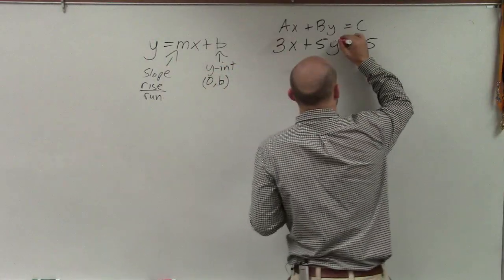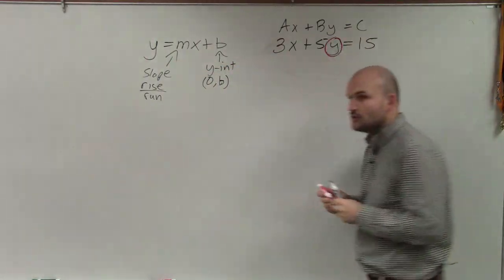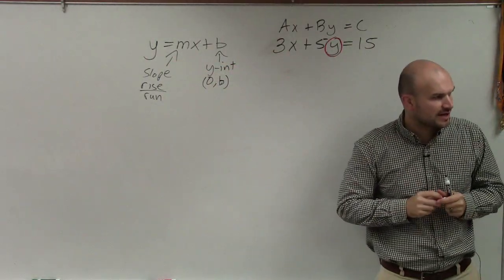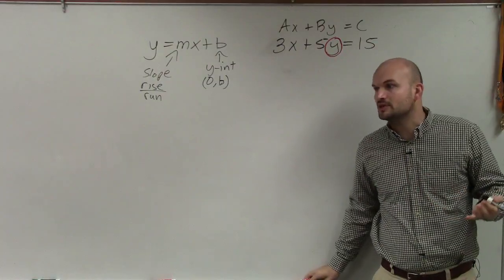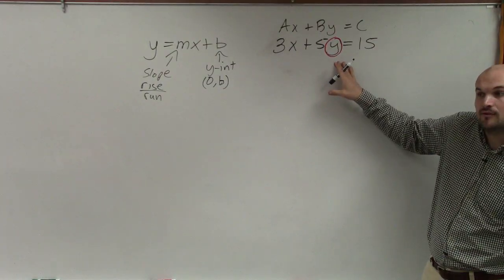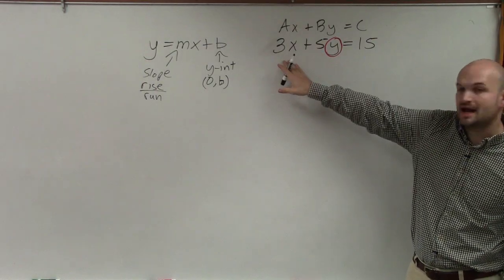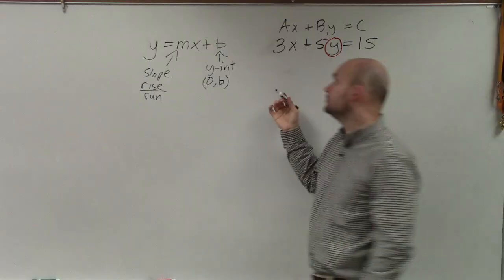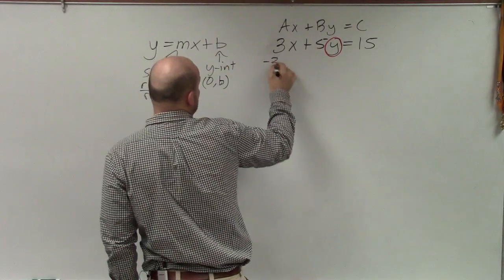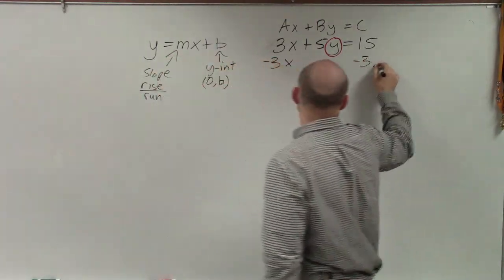So you guys see we have a variable y. And in this course, we did solving literal equations, where you solve for a variable with a variable in the answer. And that's basically what we're going to do. We're going to solve for y. So you look at my y and say my y is being multiplied by 5, as well as being added by 3x. So to undo, we need to undo everything that's happening. So we always undo addition and subtraction first.